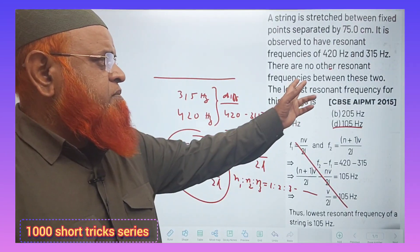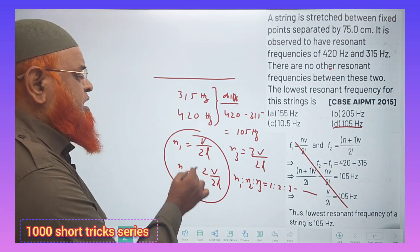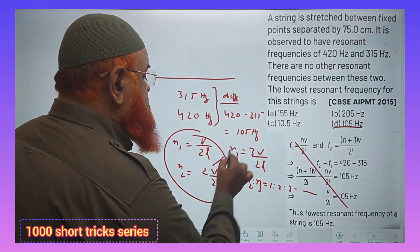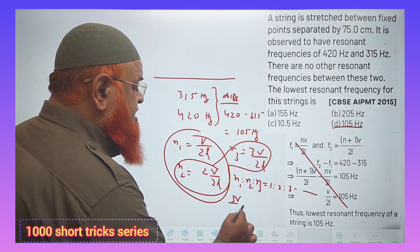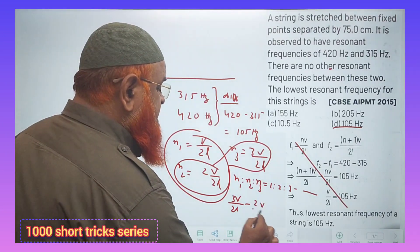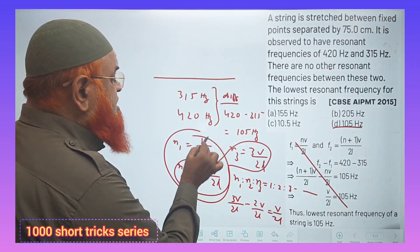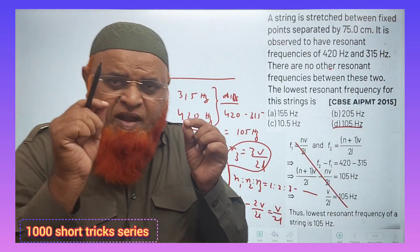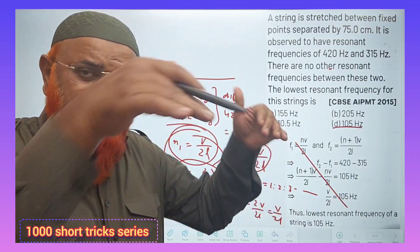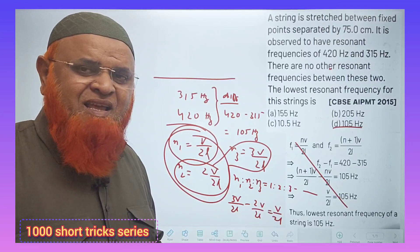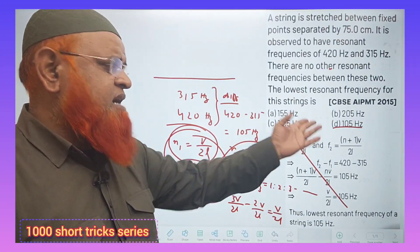So if the successive frequencies are given, if you make the difference between these two, like for example, 3V by 2L minus 2V by 2L, you are going to get V by 2L, which is going to be the fundamental frequency. So if you want to find out the fundamental frequency, you just subtract the frequencies which are beside, then you will get V by 2L directly. Just make the difference and get the answer directly.